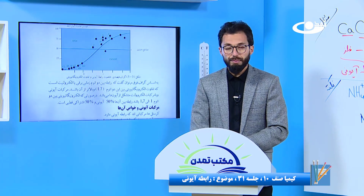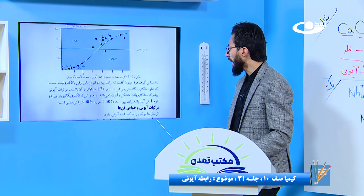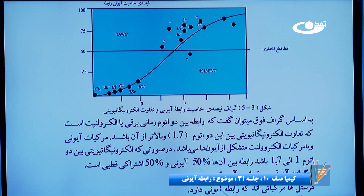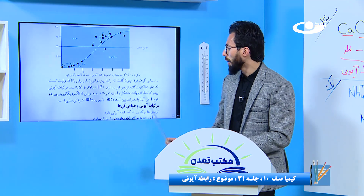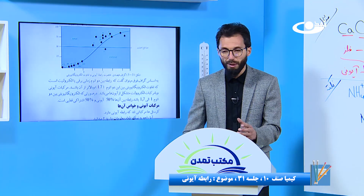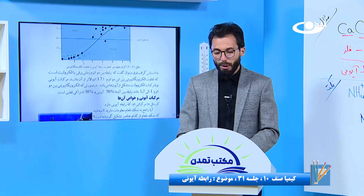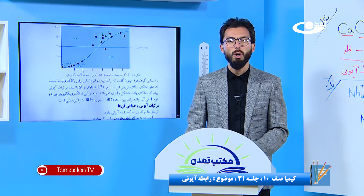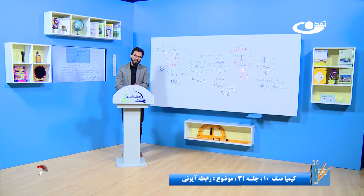اگر تفاوت الکترونگاتیویتی از یک تا ۱.۷ باشد، پنجاه فیصد رابطه آیونی و پنجاه فیصد رابطه اشتراکی می‌شود - که به نام اشتراکی قطبی هم یاد می‌شود. ما شما در آینده بیشتر در مورد اشتراکی قطبی می‌خوانیم.